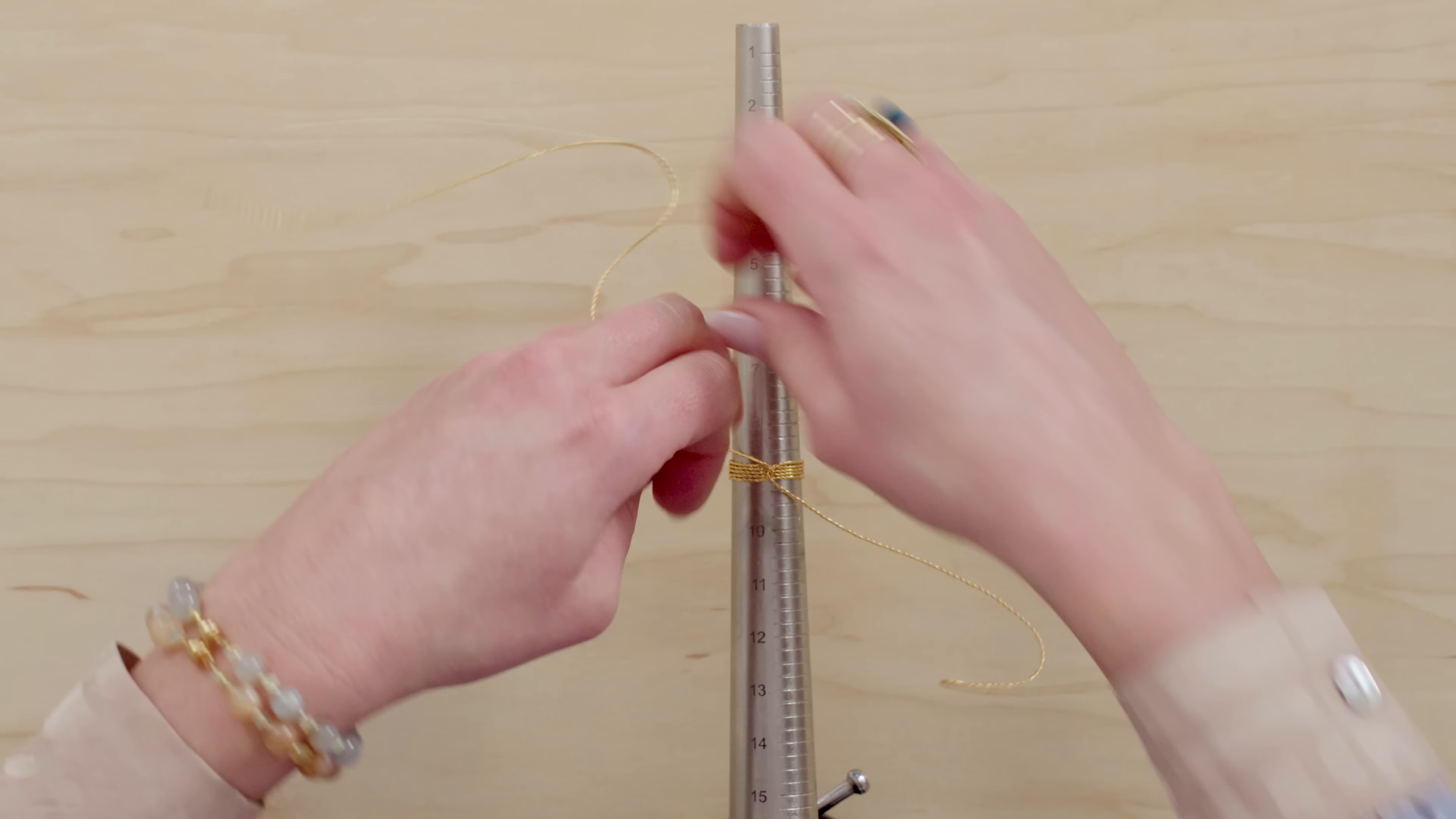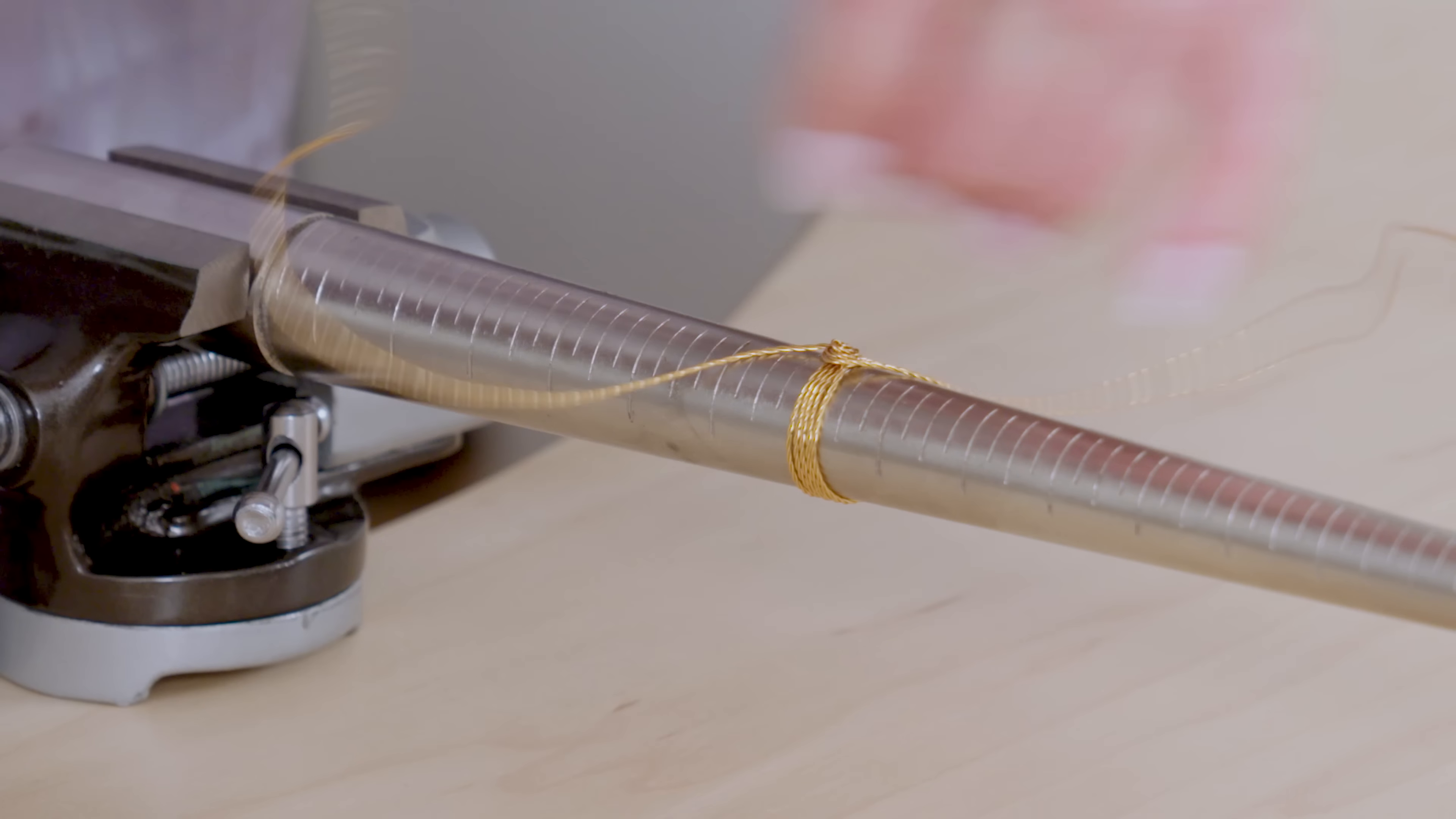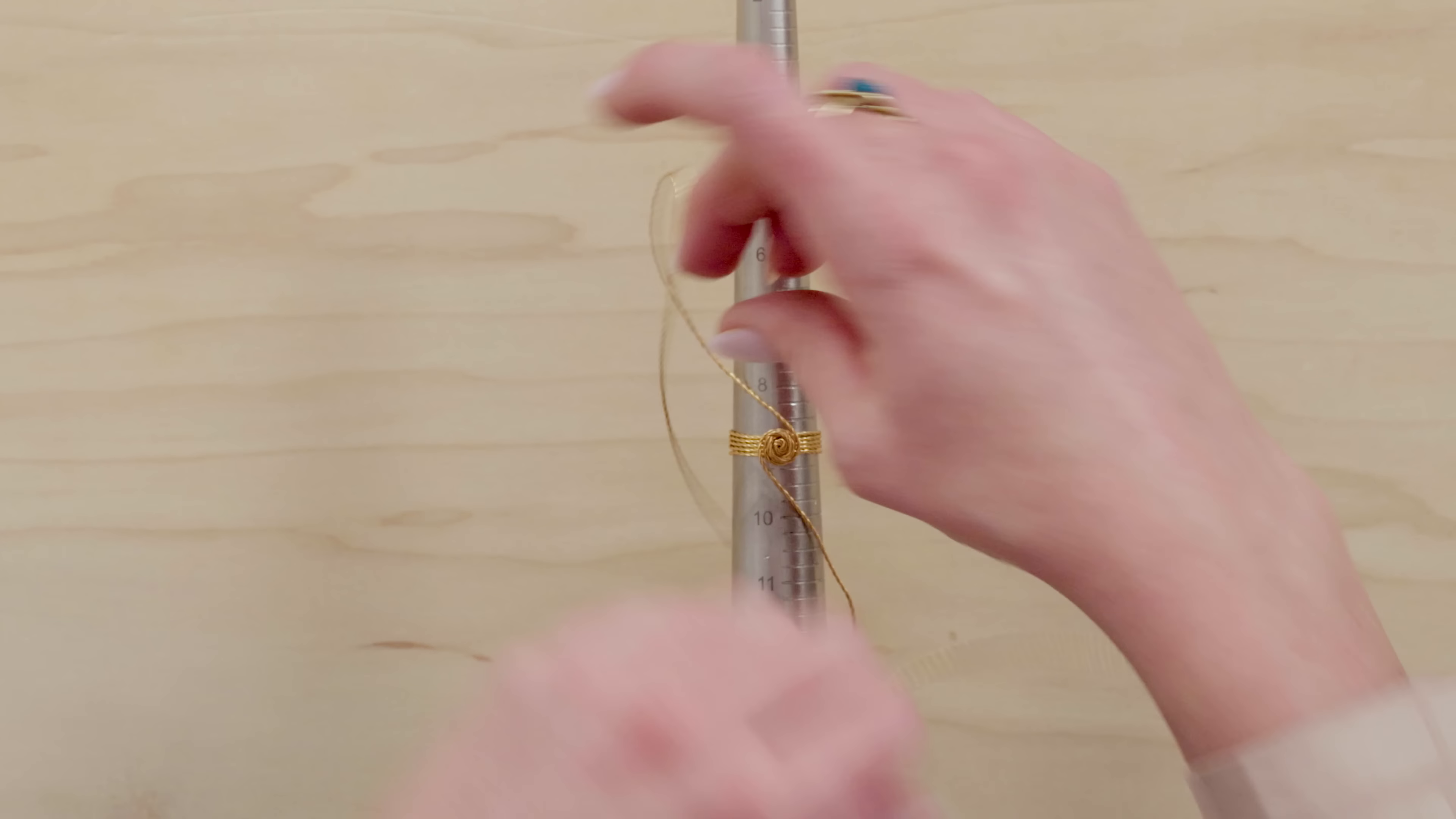Okay so next we're going to take those tails and where they cross in the middle we're just going to softly twist it. Then we're going to do that again and again. And you just gently twist it as it starts to build up into a really cool little shape.